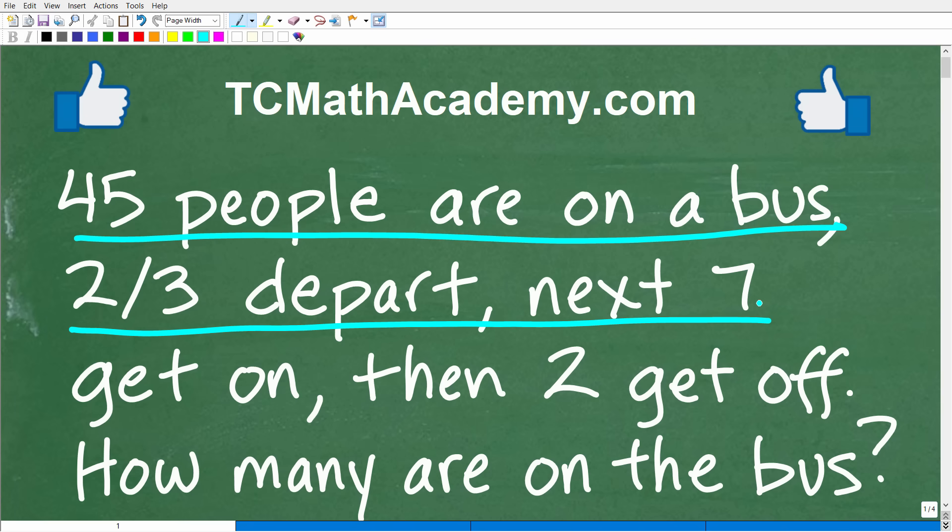Two-thirds of them depart. Next, seven get on, then two get off. How many people are still on the bus after all that activity? So this is the problem, and if you can figure this out, go ahead and put your answer into the comment section.